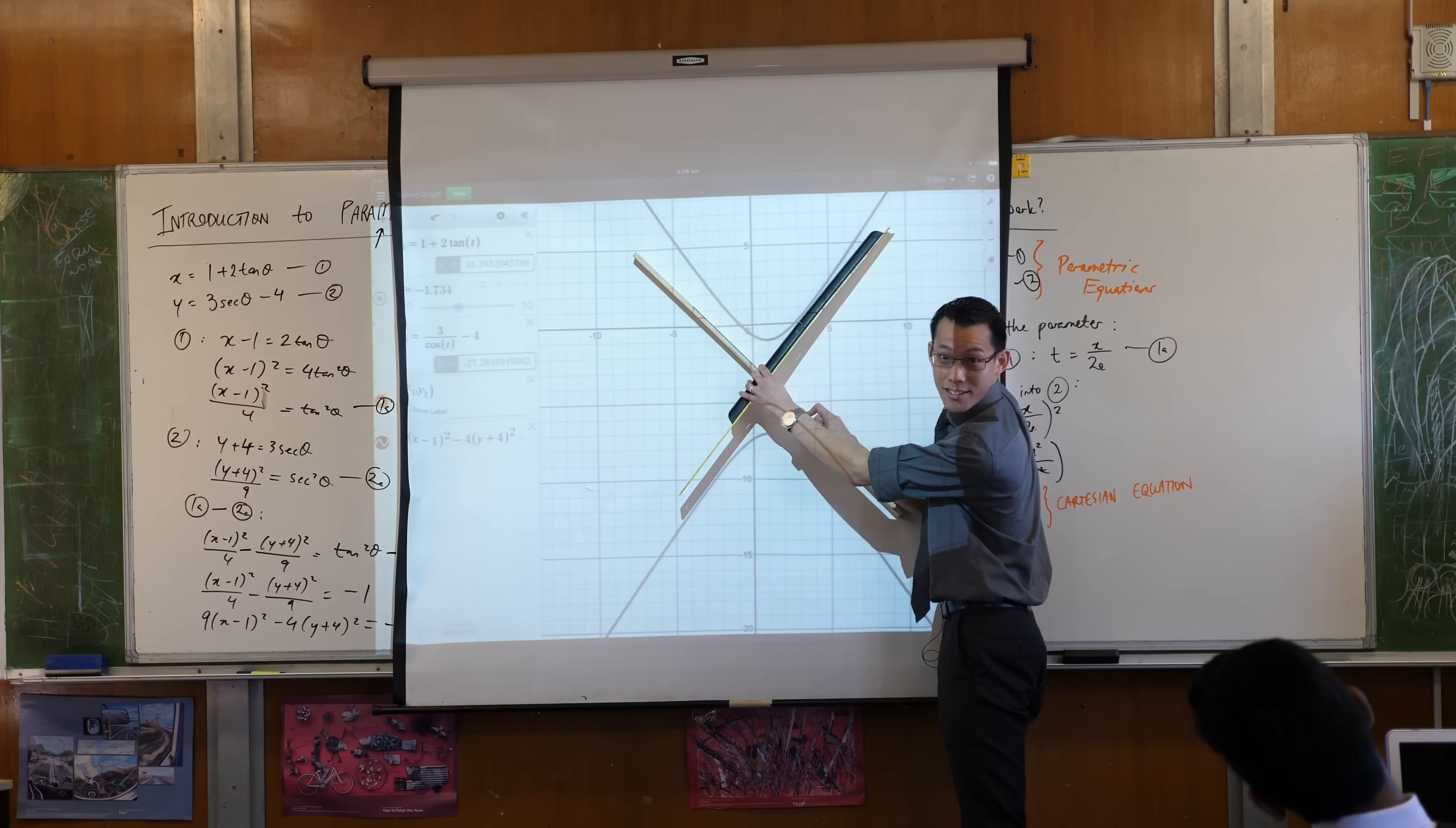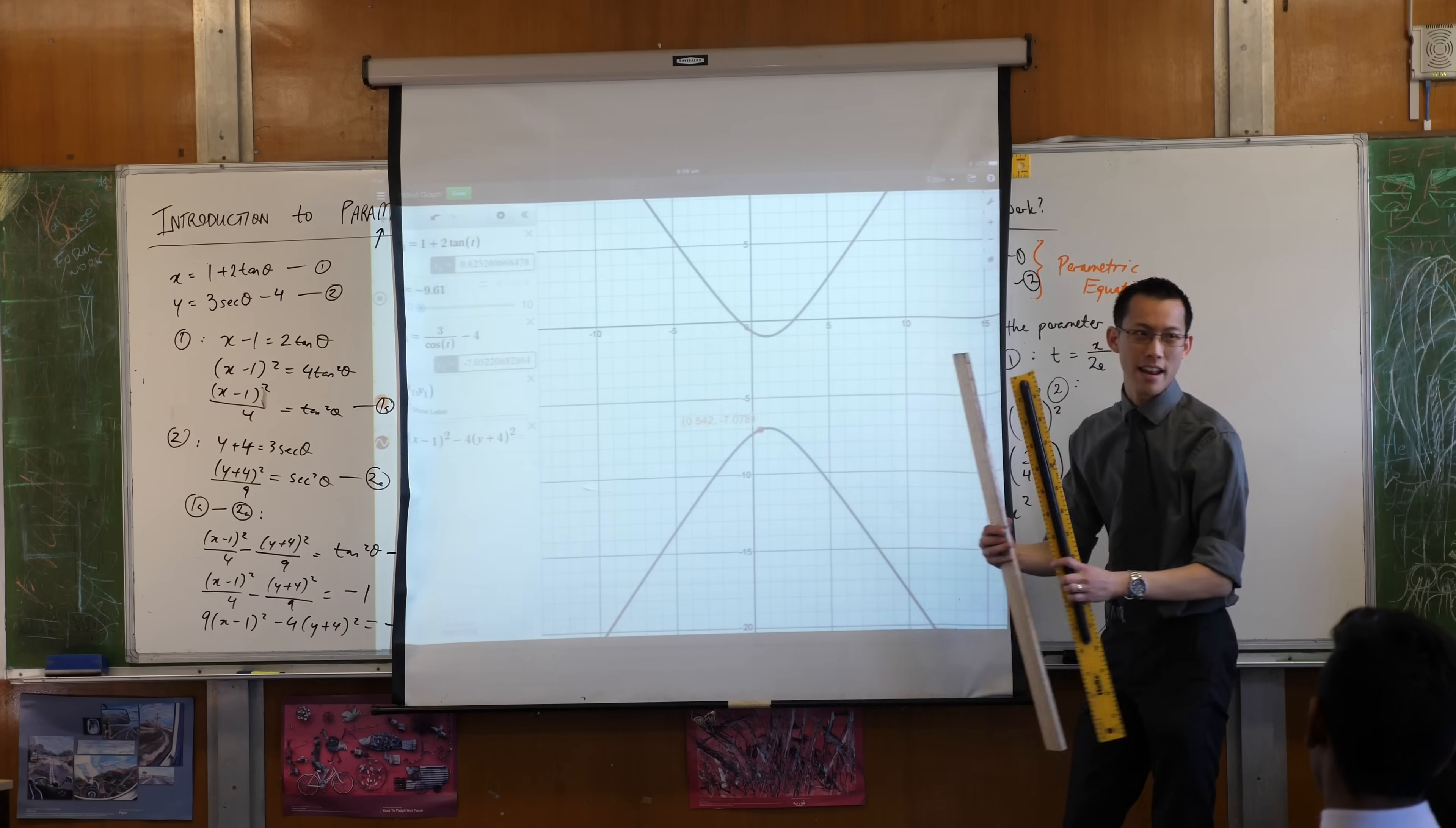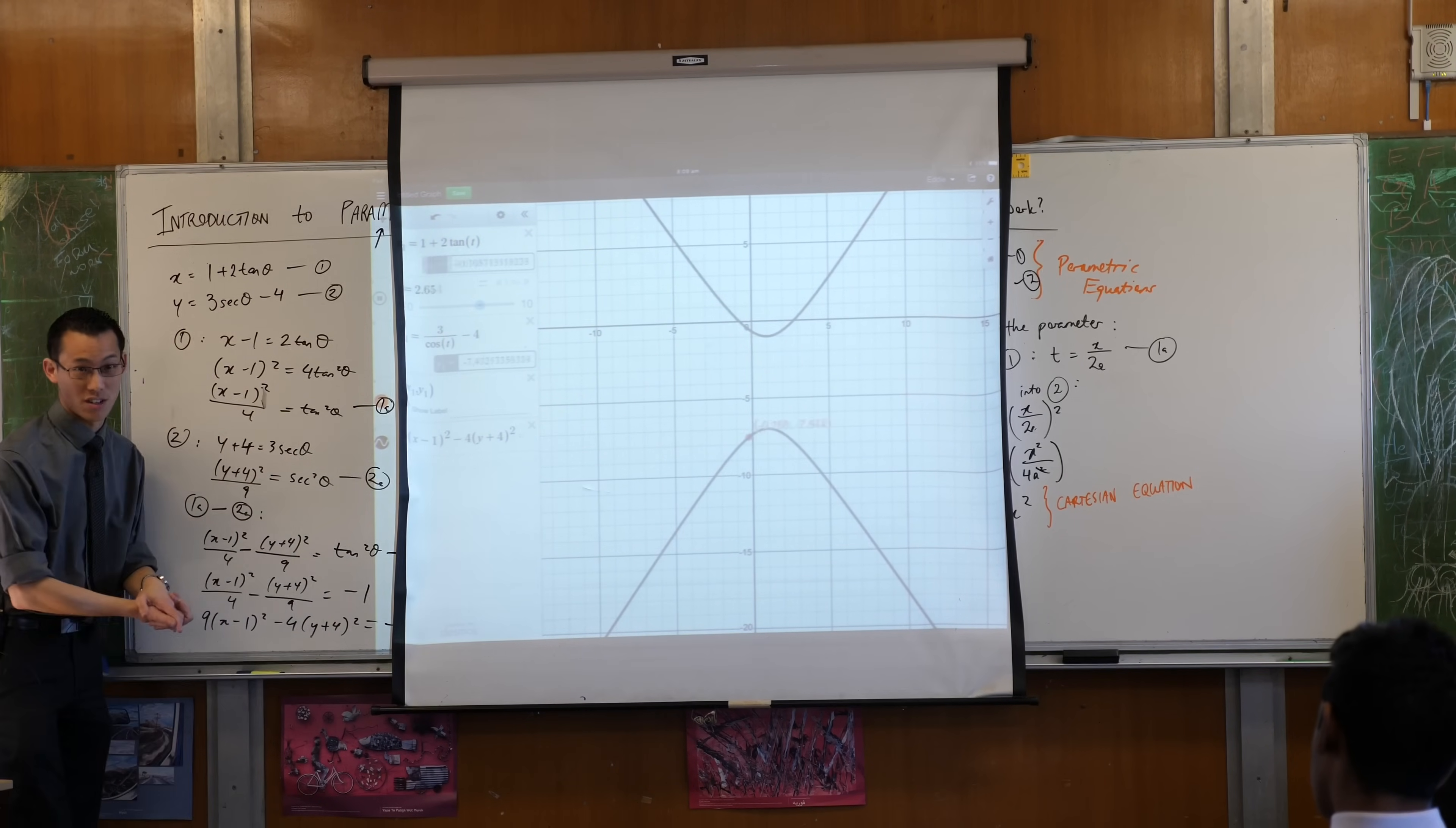This is a hyperbola, right? It's the same kind of hyperbola you've been dealing with for years, except it's off at an angle, right? And that's why it has this weird, funky equation like this. But that's the shape. That's the Cartesian equation.